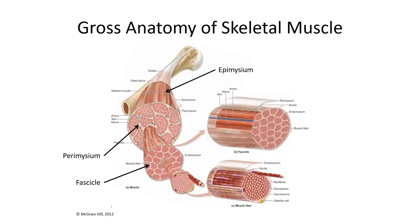Embedded in the perimysium are arterioles, venules, and small nerve branches coursing towards their destination. Finally, there's the endomysium. Unlike the other two layers of dense, irregular connective tissue, this layer is comprised of loose areolar connective tissue that surrounds individual muscle fibers. Not something that can be clearly viewed with the naked eye, but under the microscope, it's responsible for the clear boundary separating individual muscle fibers.